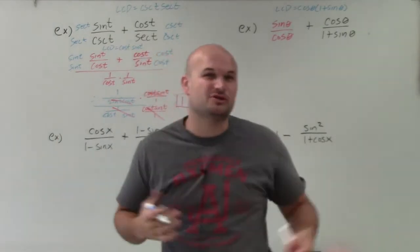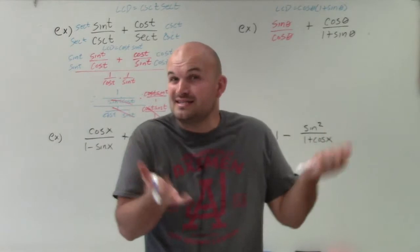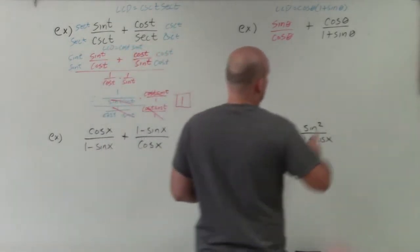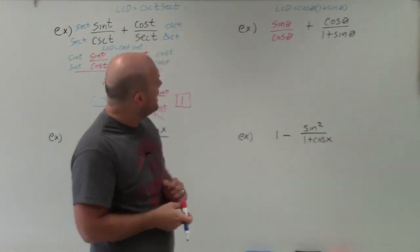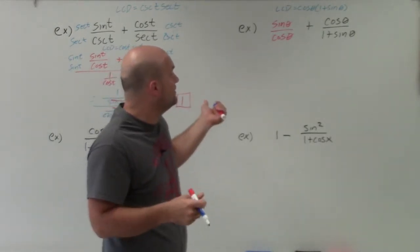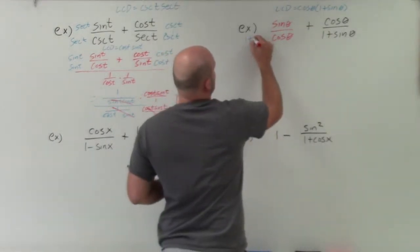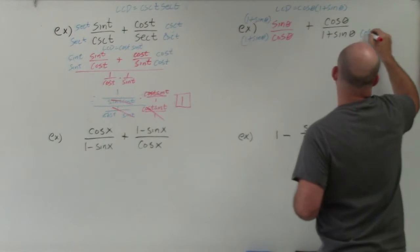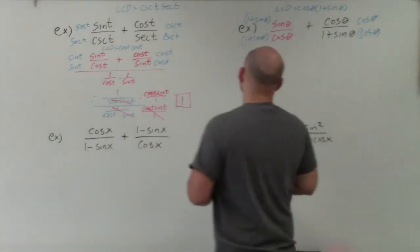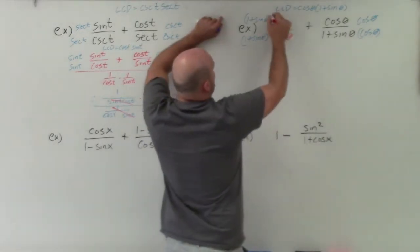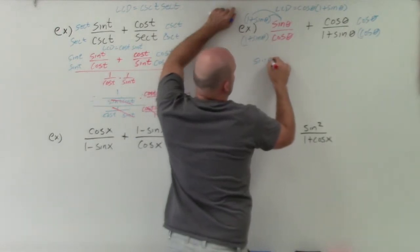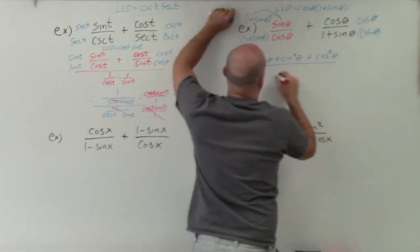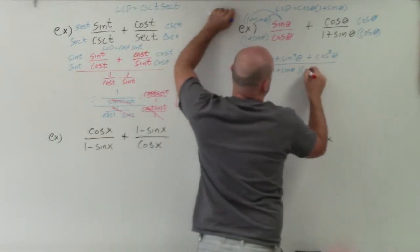When dealing with trigonometric functions, the LCD is basically going to be the product of the two denominators. To get common denominators, I'll multiply the first term by 1 plus sine of theta over 1 plus sine of theta, and the second term by cosine of theta over cosine of theta. Applying the distributive property, I obtain sine of theta plus sine squared of theta plus cosine squared of theta, all over 1 plus sine of theta times cosine of theta.